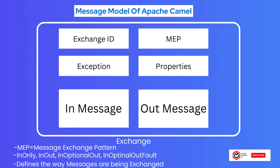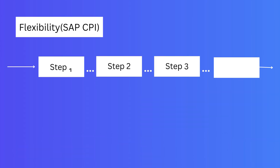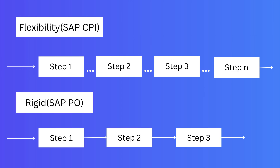MEP basically indicates the direction — whether it is a synchronous message or an asynchronous message. The freedom that a developer can get with this framework is that you can have the set of steps in any order — for example, routing, message mapping, and routing again in any combination. In SAP CPI, we can have different combinations of steps. In SAP PO, we had a set of predefined steps that could not be changed, but by using SAP CPI and the Apache integration framework, we can have our own defined set of steps to process the message end to end.